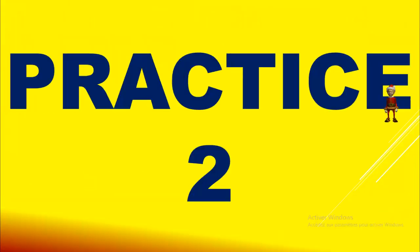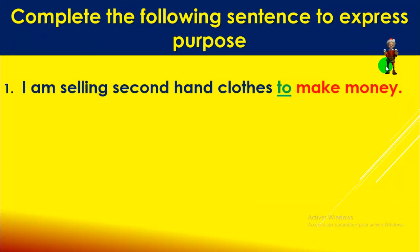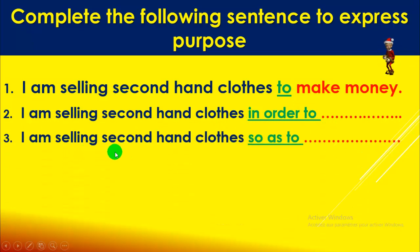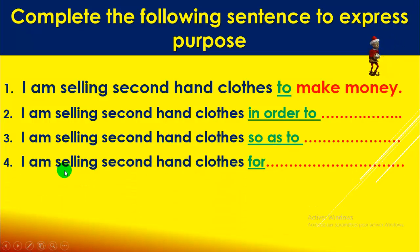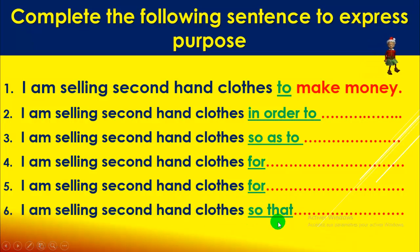Practice number two: complete the following sentences to express purpose. Example: I am selling second-hand clothes to make money. Now complete: I am selling second-hand clothes in order to ___, so as to ___, for ___, so that ___. Complete with the verb 'to make money'.